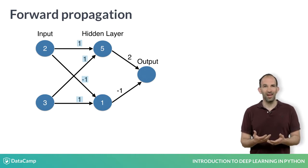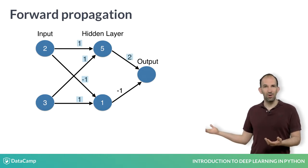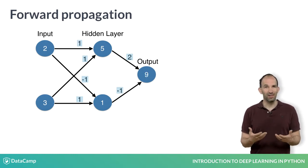Finally, we repeat this process for the next layer, which is the output layer. That is 5 times 2 plus 1 times minus 1. That gives an output or prediction of 9. So we predicted 9 transactions.